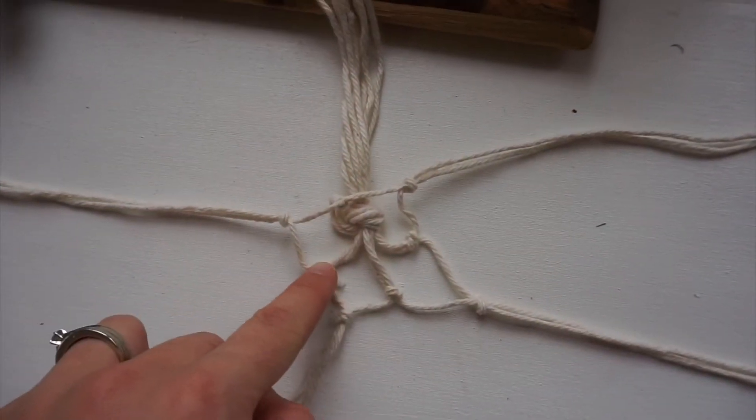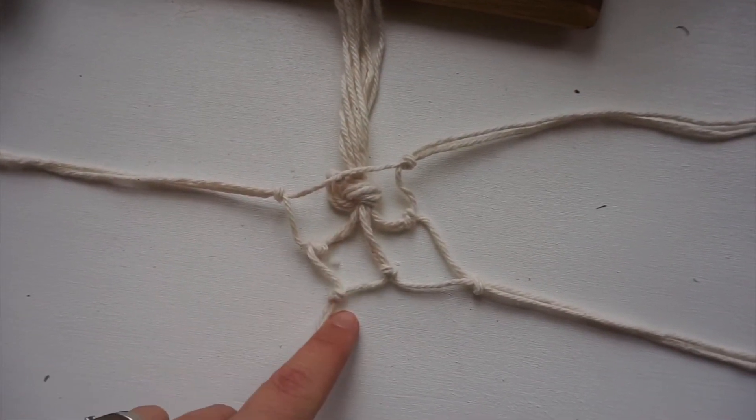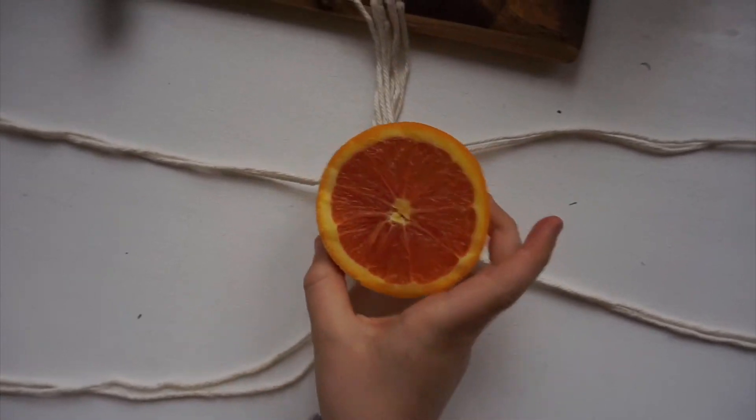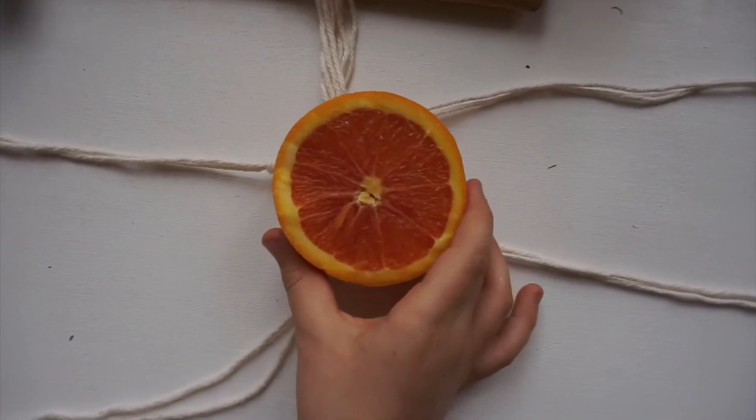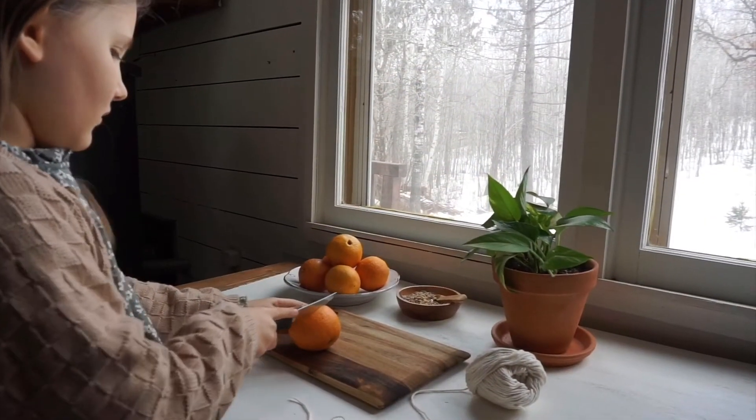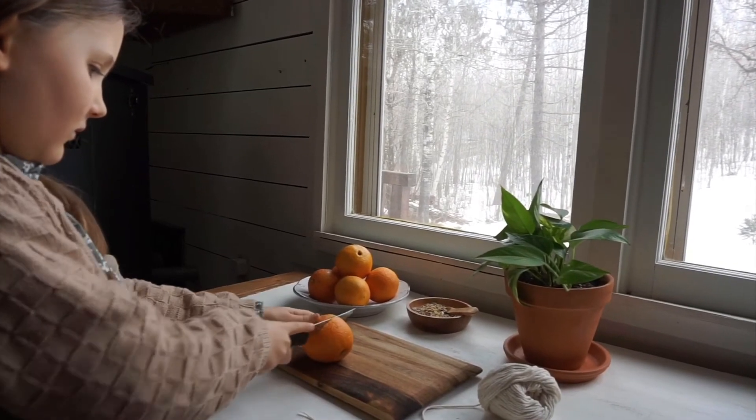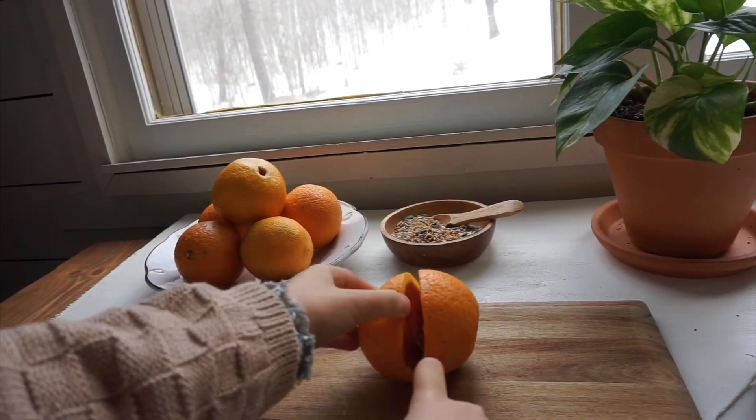The main knot, the one set of knots an inch away, and then the other set of knots an inch away. You'll be ready for the orange once we go ahead and scoop out the goodness.